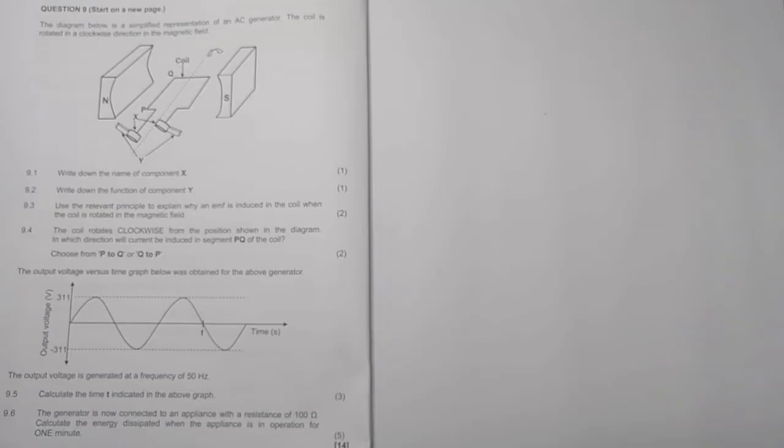Now the next question says the output voltage versus time graph obtained from the above generator. We can see they've given us a maximum voltage there - that's our maximum value. And they say the output is generated at a frequency of 50 hertz. Now they say to us, calculate the time T indicated in the above graph.